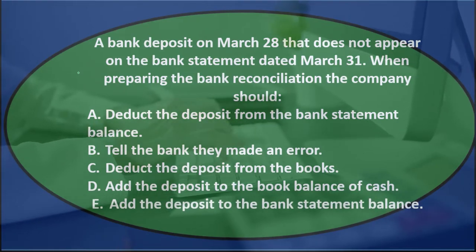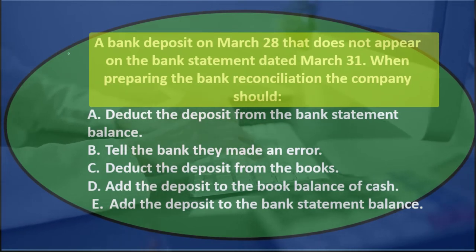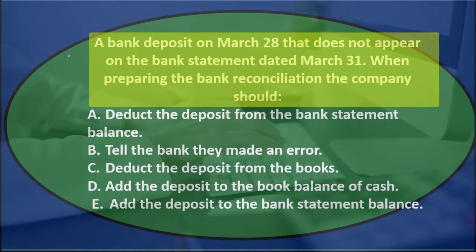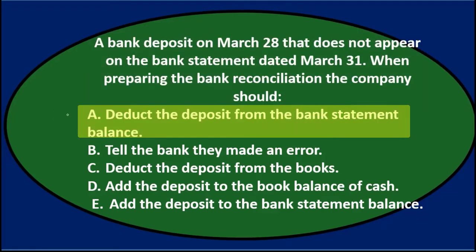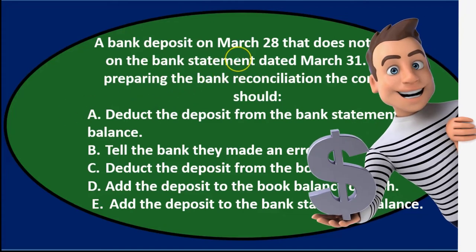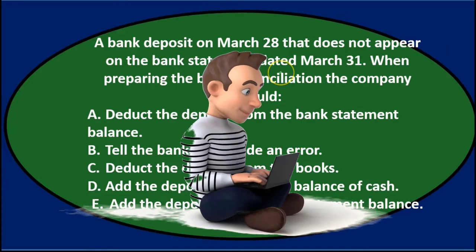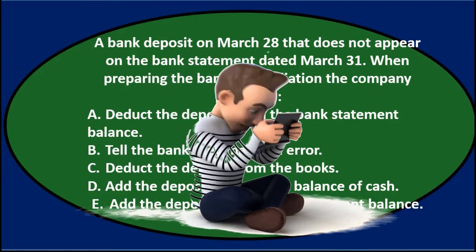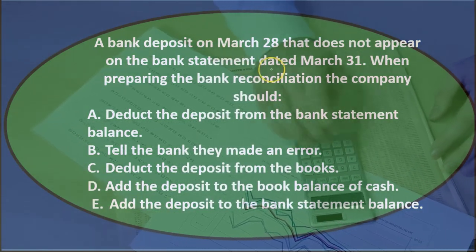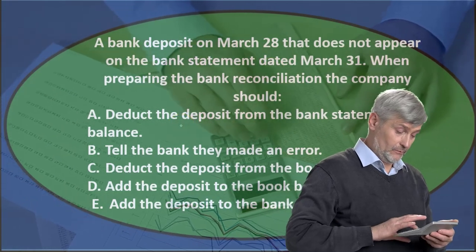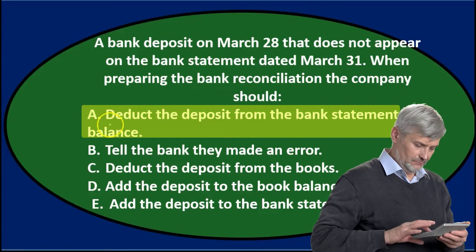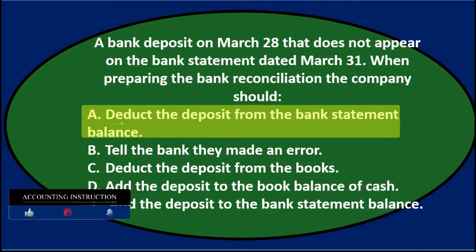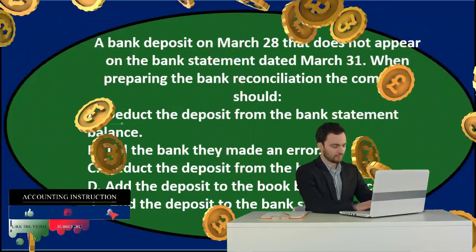A bank deposit on March 28th does not appear on the bank statement dated March 31st. When preparing the bank reconciliation, we would typically say this is a timing difference — we put the deposit in, but the system didn't pick it up in March; it will appear in April. So it's just a timing difference we're dealing with.